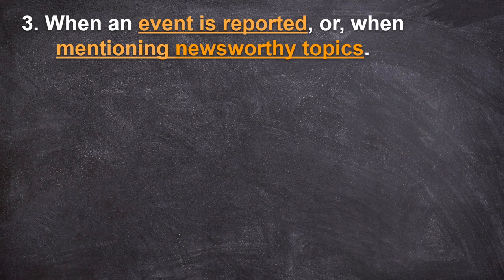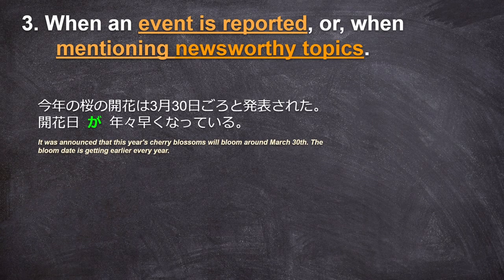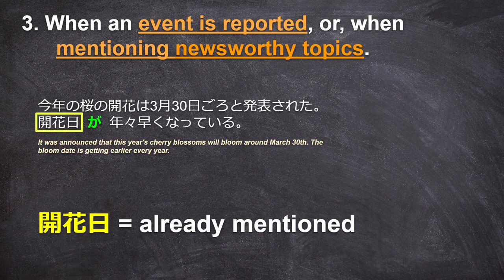Finally, when an event is reported or when mentioning newsworthy topics, you can use が even though the topic is known. Like in this example sentence: 今年の桜の開花は3月30日頃と発表された。開花日が年々早くなっている — It was announced that this year's cherry blossoms will bloom around March 30th. The bloom date is getting earlier every year. So even though the 桜の開花 event was already mentioned just a few characters before, が is able to be used after 開花日 because this event is being reported in a news fashion.